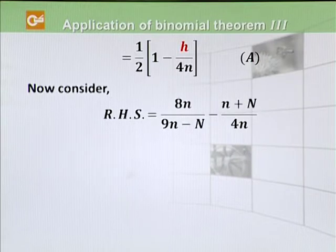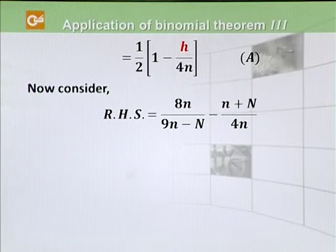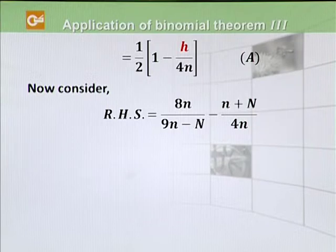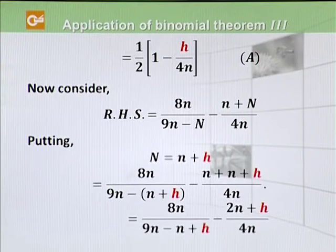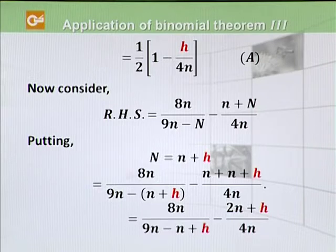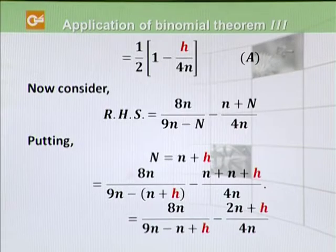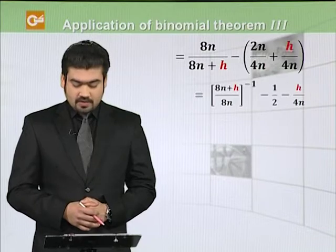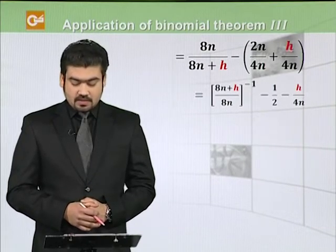Ab hum right hand side ki expression ko dekhna hai aur uspe binomial expansion apply karenge, aur dekhenge ke ye equation A ke equal aata hai ya nahi. So right hand side is: 8n divided by (9n minus n minus capital N), whole divided by 4n. Sab se pehle capital N ko replace karenge with (n plus h). So we have 8n divided by (8n plus h), minus (2n plus h) over 4n.